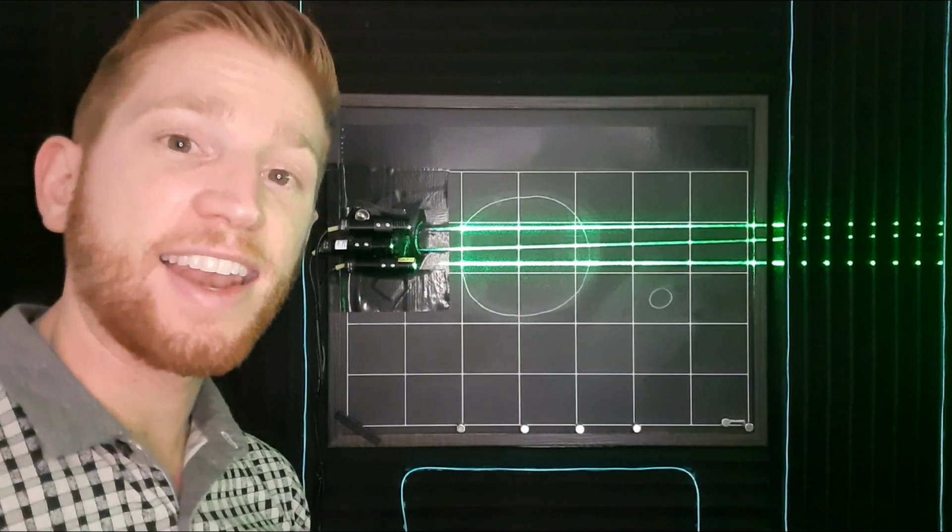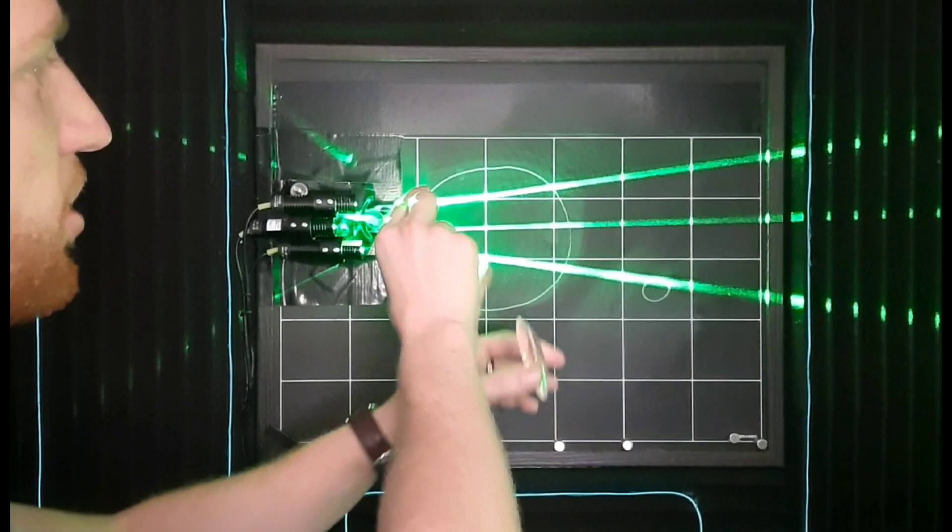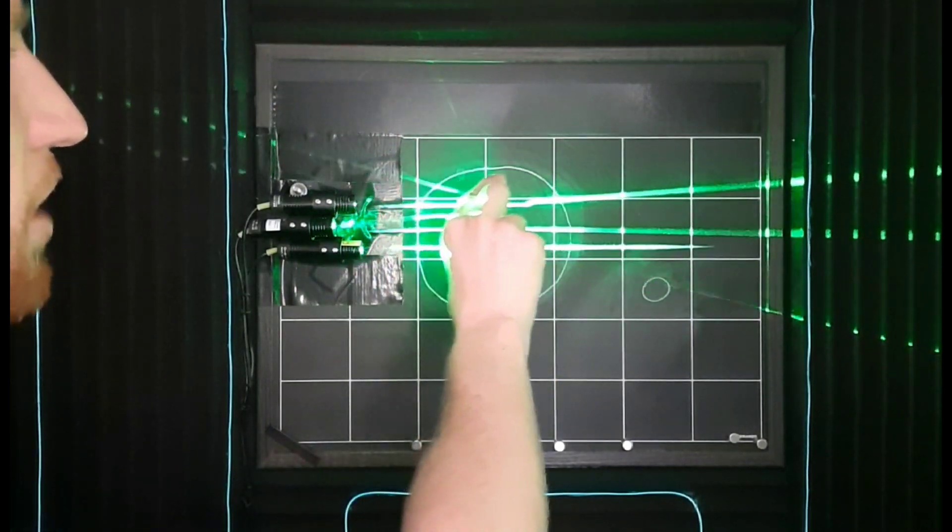On the other hand, negative or minus lenses spread light out instead of focusing it to a point. You can see these lines of light moving away from each other.